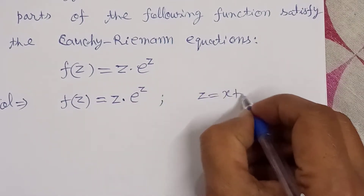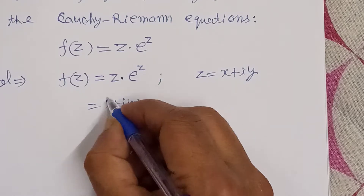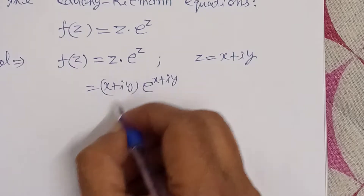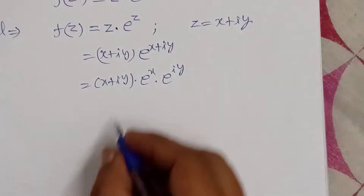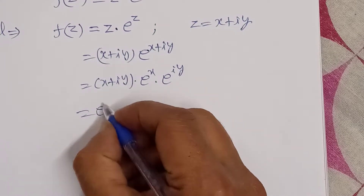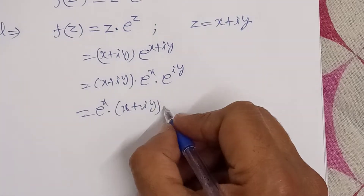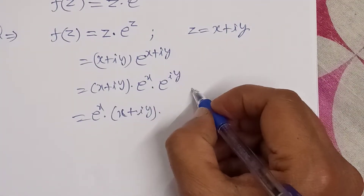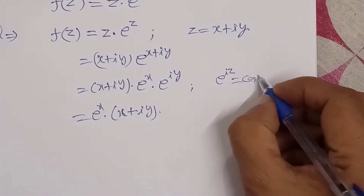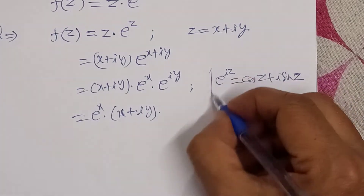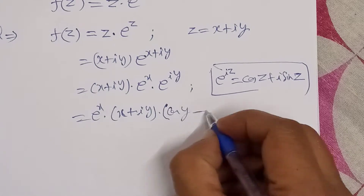We know that z = x + iy. So by substituting, we can separate the real and imaginary parts. We write (x + iy) · e^x · e^(iy). We apply Euler's formula, e^(iy) = cos y + i·sin y, so the second bracket becomes the complex number cos y + i·sin y.